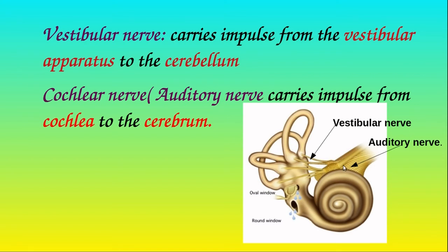There are sensory nerves that go from the inner ear to the brain. The vestibular nerve carries impulses from the vestibular apparatus to the cerebellum — the part of the brain that controls balance. The nerve that carries auditory impulses from the cochlea to the auditory part of the brain is called the auditory nerve or cochlear nerve. Together they form the cochlear-vestibular nerve.